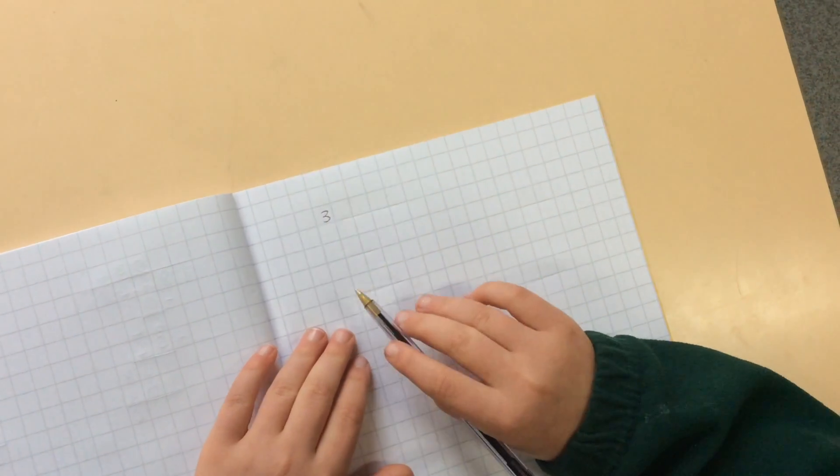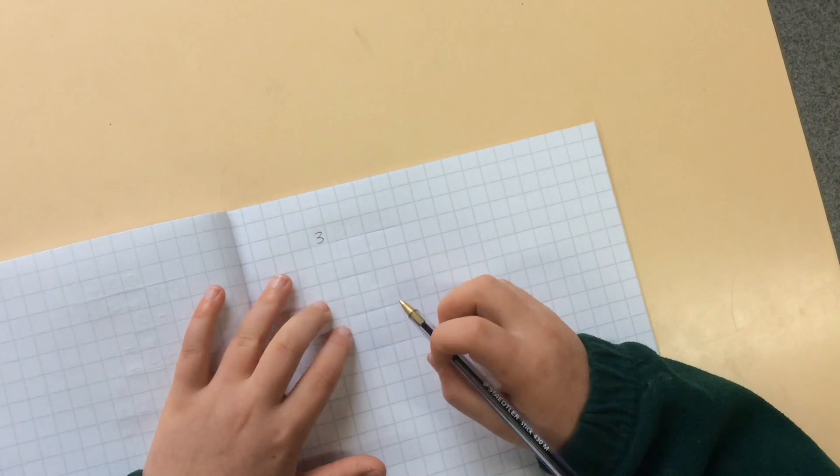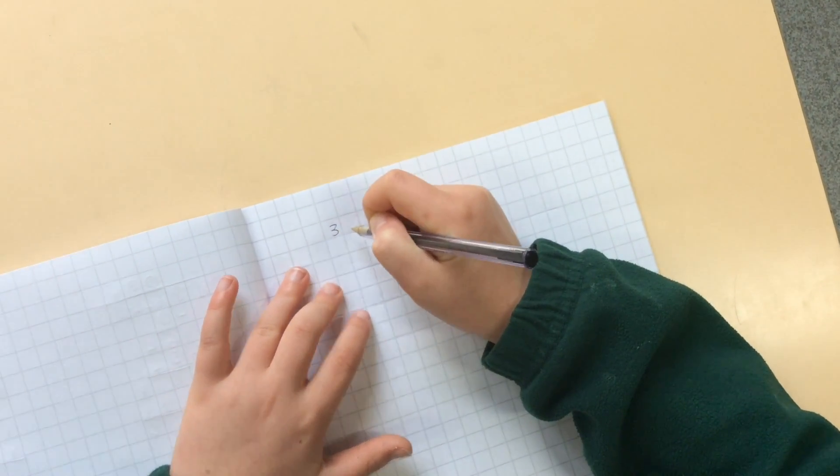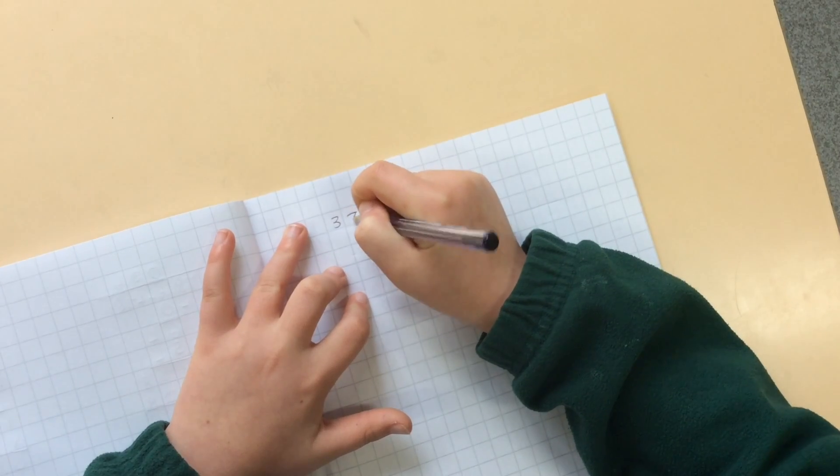This is the formal method for multiplication. We're going to start with short multiplication. So I'm going to start with an equation like 37 times 5.